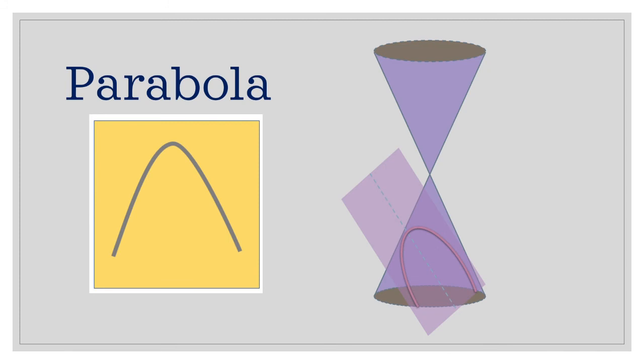And then when we reach the point that the position of the angle of the plane is parallel to the side of the cone, then we can now have a parabola.